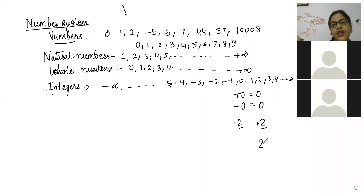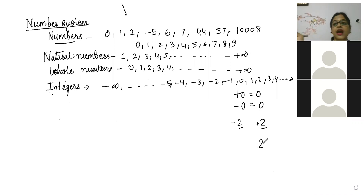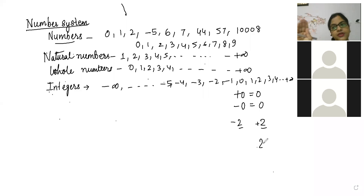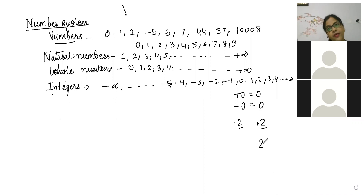Going back to the topic — integers are those numbers which are positive, which are negative, and it contains the number zero, which is neither positive nor negative. It is a set of numbers containing positive numbers and negative numbers also.